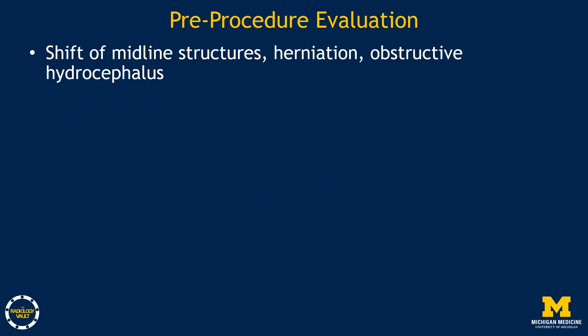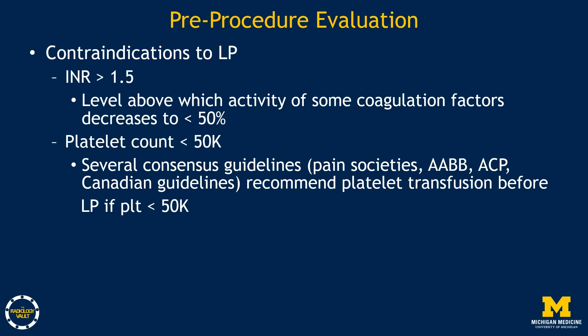Potential imaging findings that may preclude an LP include shift of midline structures, herniation, or obstructive hydrocephalus. An INR greater than 1.5 is a contraindication to an LP, and in general, a platelet count less than 50,000 is a contraindication. Some studies have shown no increased risk of complications with platelet counts as low as 20,000; however, multiple consensus guidelines recommend platelet transfusion before an LP if the count is less than 50,000.